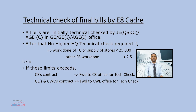Technical check of final bills by E8 CADR: all bills shall be initially checked by GE QS&C and AG contract in GE and AG independent office. If work done on a final bill for a term contract or supply of stores is less than 25,000, or for other final bills work done is less than 2.5 lakhs, then technical check by CWE office is not required. Otherwise, all final bills will be forwarded to CWE office for further technical check, except in Chief Engineer's contracts where the final bill is forwarded directly to the Chief Engineer's office.